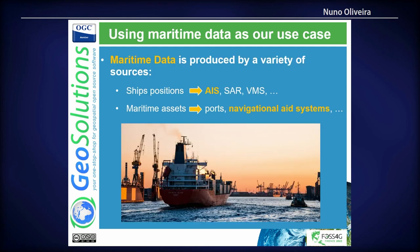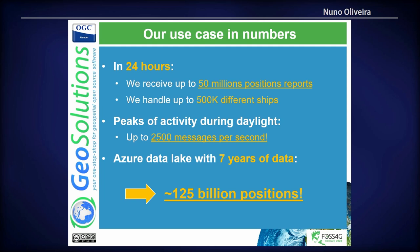The use case I'll use for all demonstrations is maritime data — vessels at sea, aids to navigation, anything maritime-related that emits or transmits a position. In numbers, in 24 hours we get around 60 million events and we deal with half a million ships per day. We have peaks of activity during certain times — typically at night in certain areas, during the day near ports, depending on whether it's a fishing vessel going out or returning. We also have historical data: seven years, around 125 billion positions. That's the dataset we have to deal with.